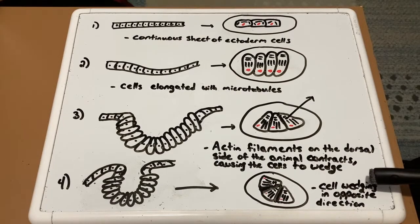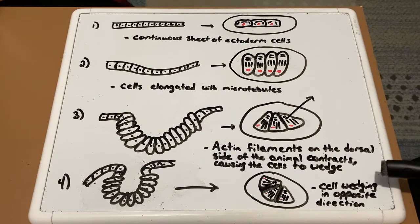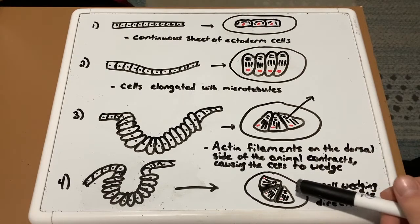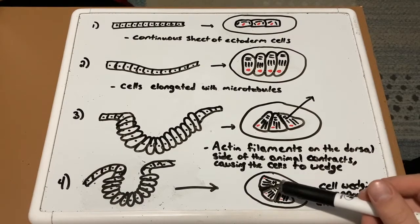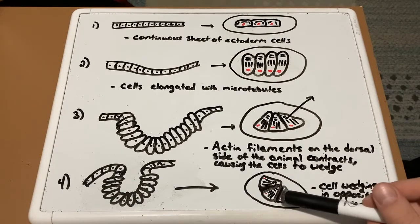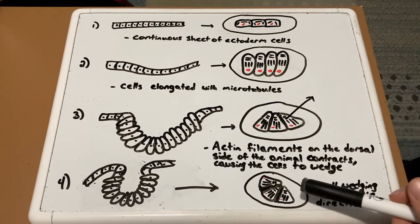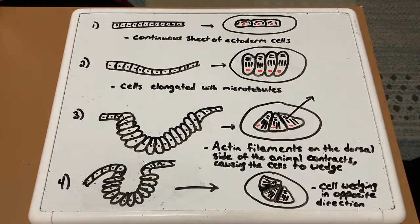And finally, we have cell wedging in the opposite direction, causing the ectoderm to hinge, pinching the cells. So again, as these actin filaments contract further, it's going to push the bottom or the base of the cell out further, causing more of a hinge. And this causes the cells to pinch.